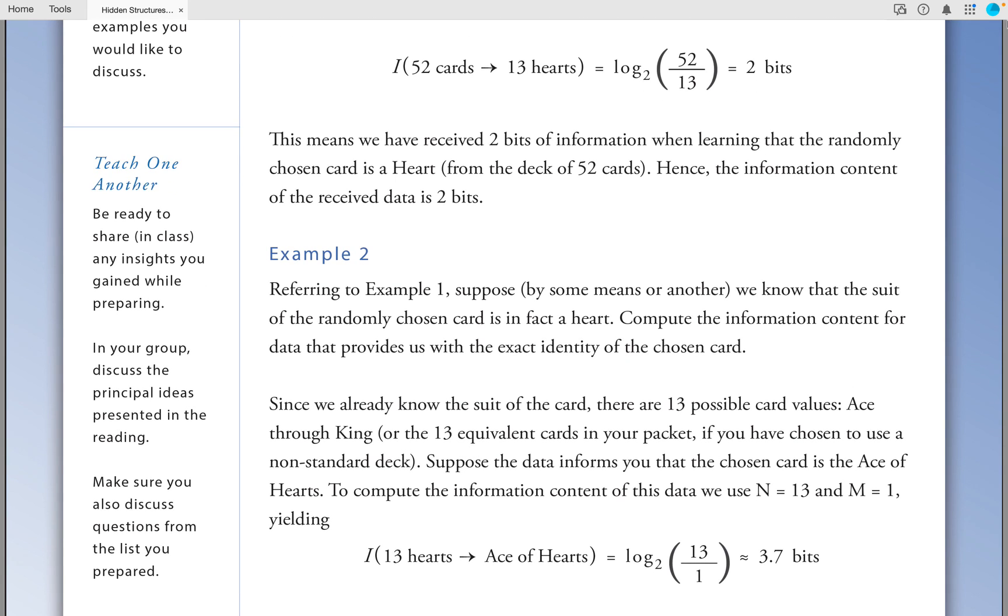Example 2: Referring to Example 1, suppose by some means or another, we know that the suit of the randomly chosen card is in fact a heart. Compute the information content for data that provides us with the exact identity of the chosen card. Since we already know the suit of the card, there are 13 possible values, Ace through King. Suppose the data informs you that the chosen card is the ace of hearts. To compute the information content of this data, we use n set equal to 13 and m set equal to 1 yielding log base 2 of 13 over 1, which is approximately equal to 3.7 bits.